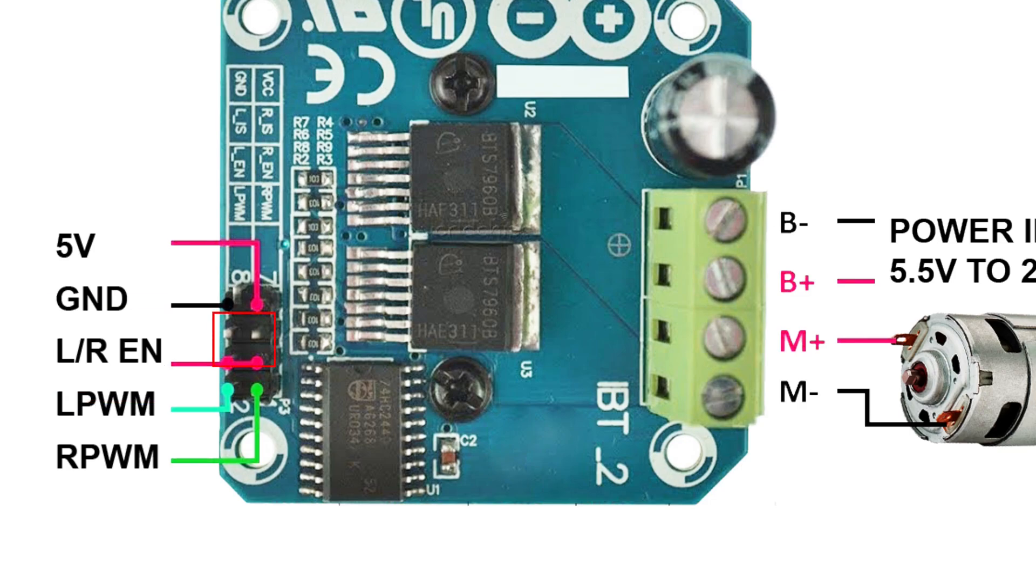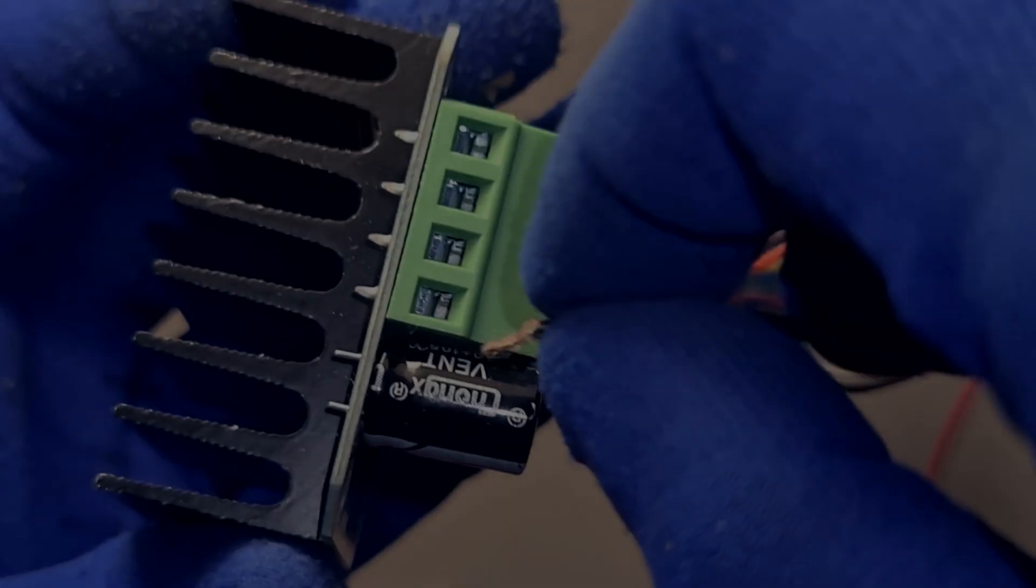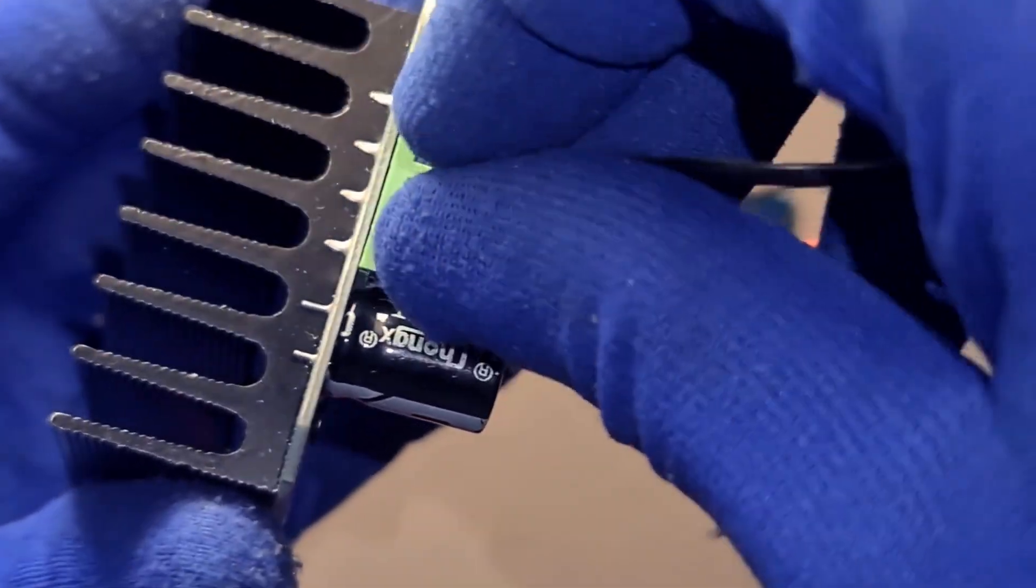R-Is and L-Is. These are current sense outputs. They give you a voltage signal proportional to the current being used by the motor. If you're not monitoring current, you can leave these unconnected. Okay, that's the logic side. Now let's talk about power and motor connections.